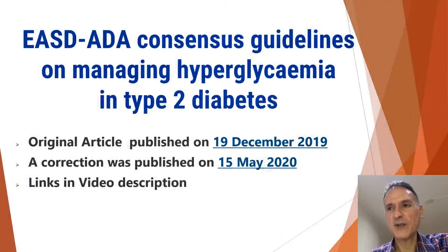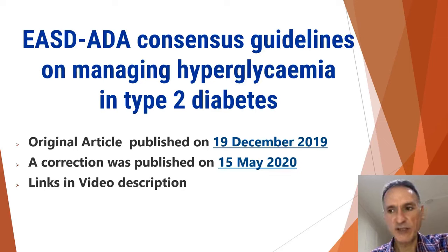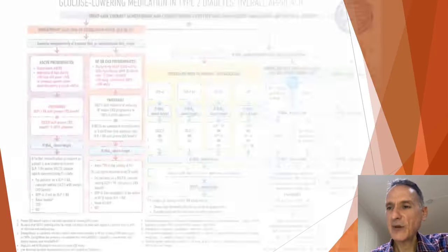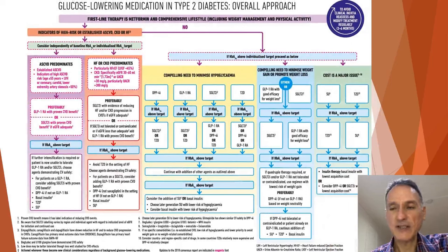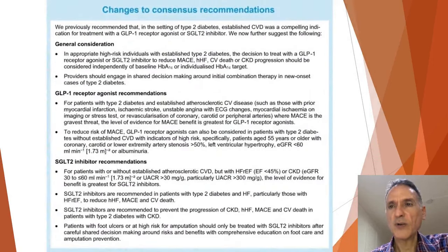Let's go straight in. We're going to start looking at the European Association for the Study of Diabetes and American Diabetes Association Consensus Guidelines on Managing Hyperglycemia in Type 2 Diabetes, published in December 2019 and corrected in May 2020 — I've put links in the video description. This is the flowchart that we're going to look at in quite a bit of detail, but before going to that, we're going to go through the changes to the consensus recommendations — just a brief summary of what the changes are.